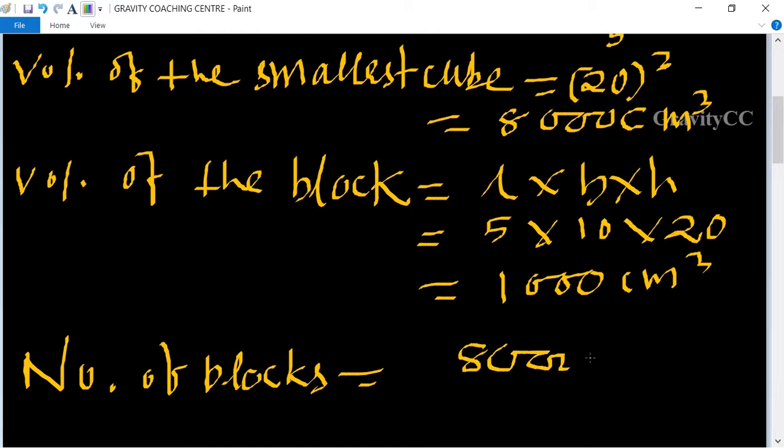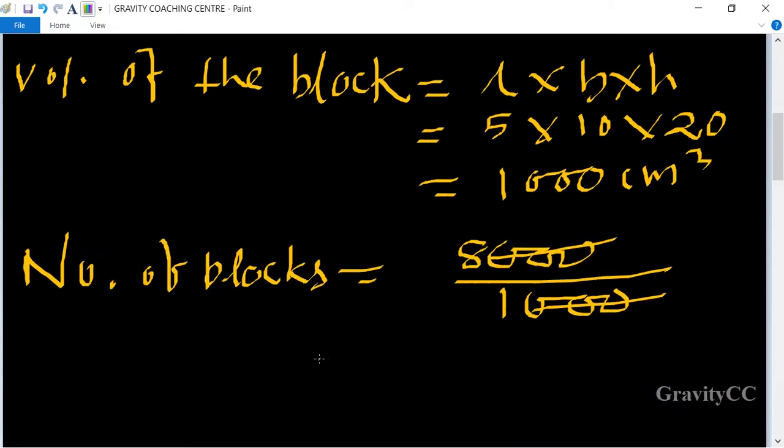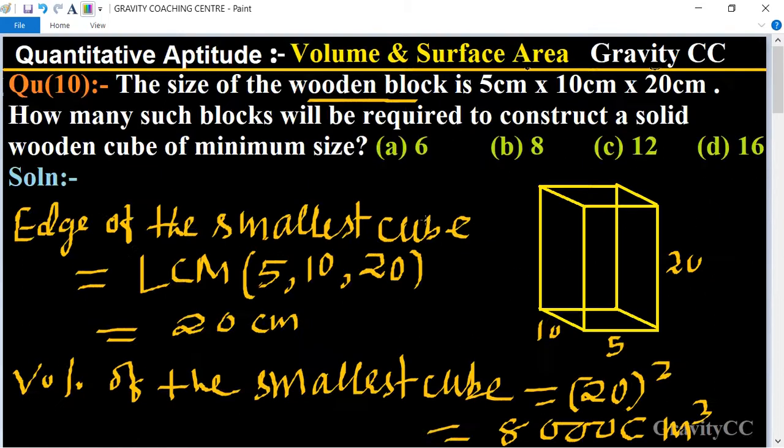Number of blocks equals 8000 divided by 1000. Triple zeros cancel, equals 8, which is the required answer. So option B is the right answer.